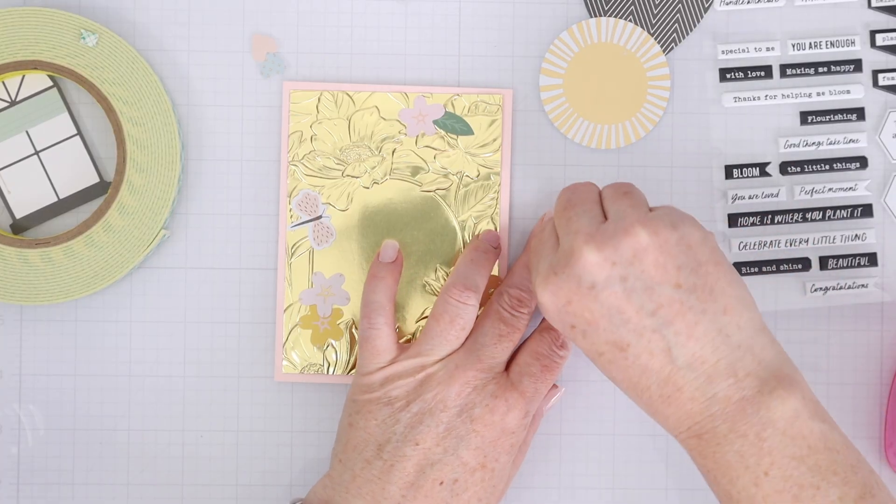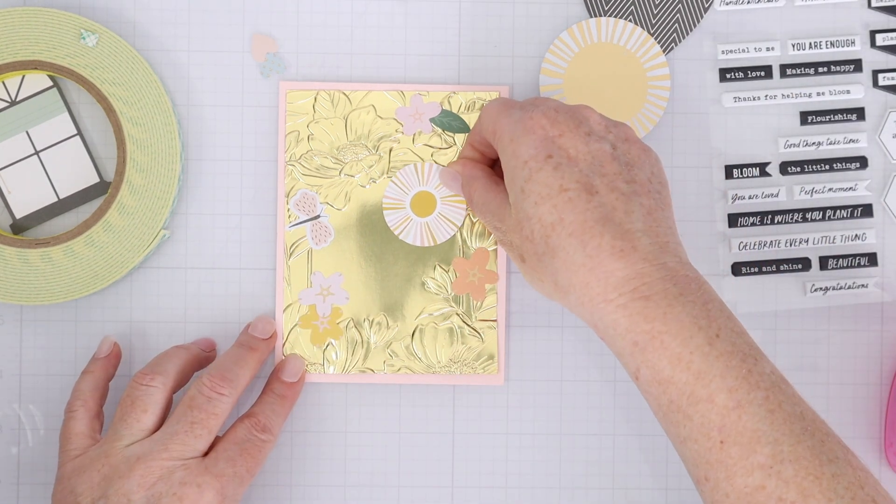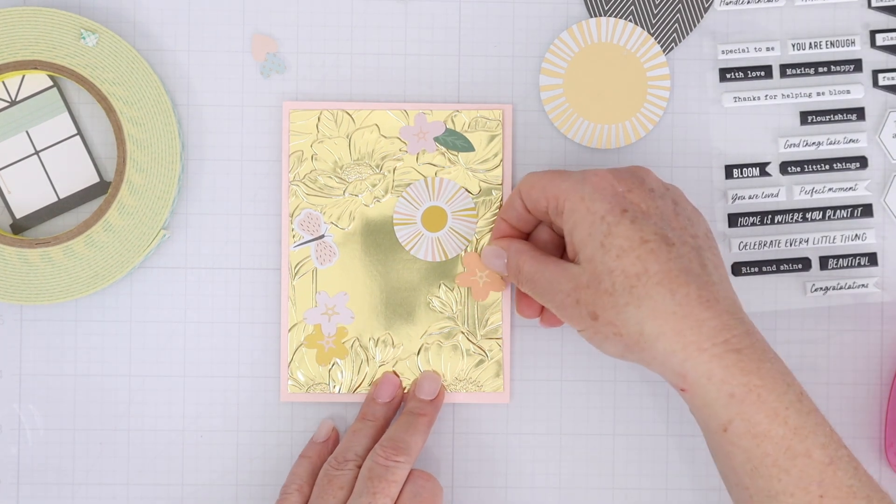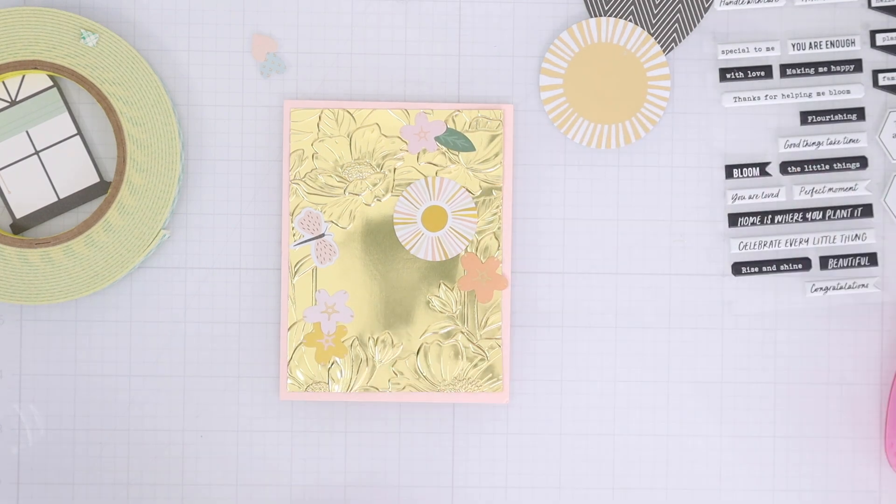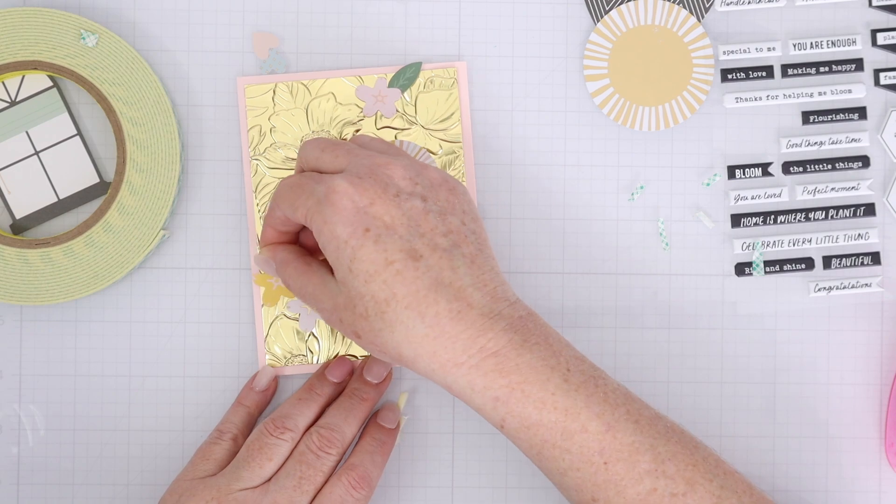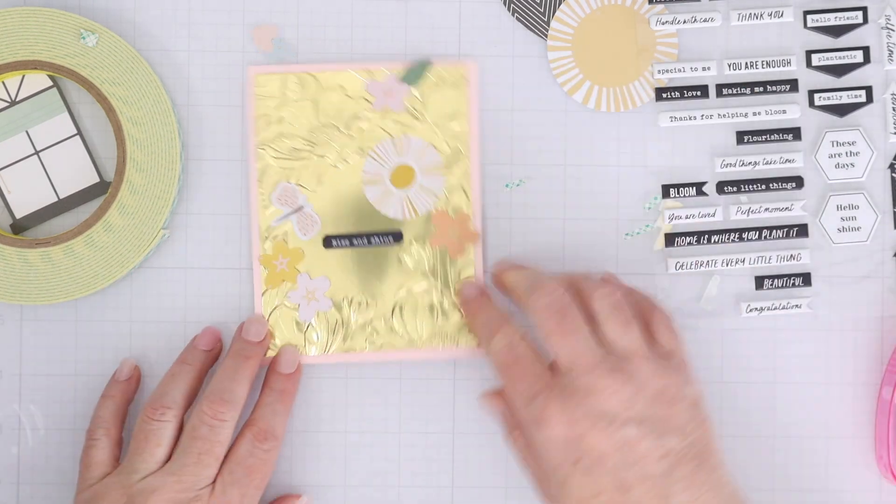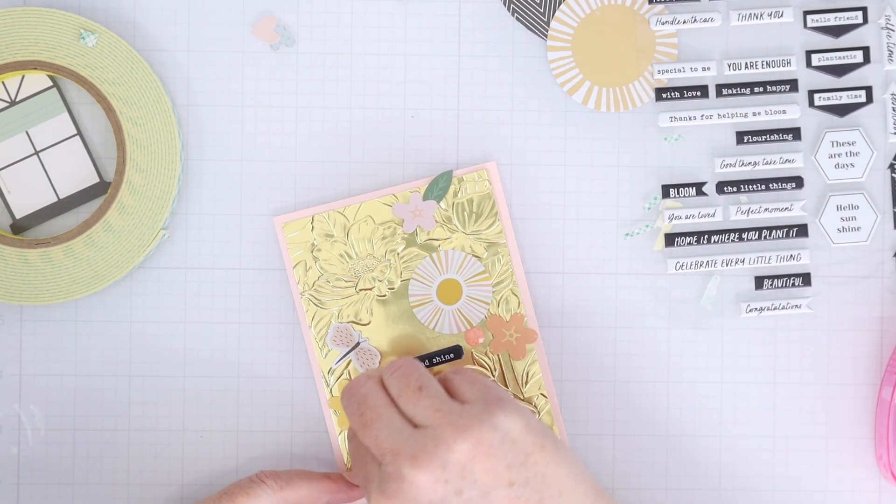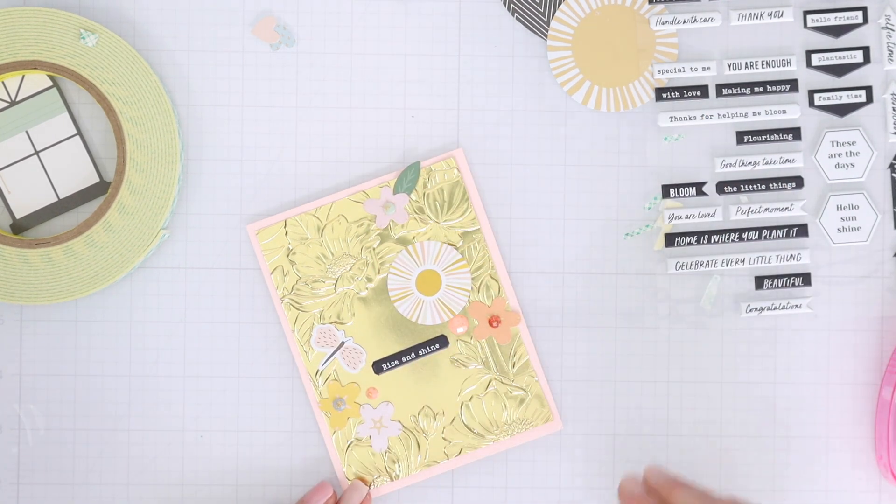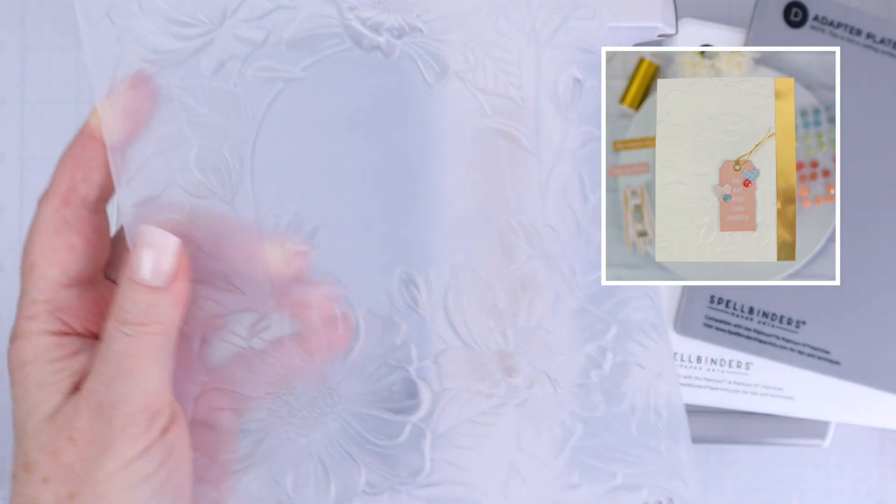So the cool thing about this embossing folder is there's lots to use on it. You could definitely do a large 5x7 card. I chose to go right around that sort of center area that's not embossed so I could place some things in there like a sentiment. I'm also going to place some die cuts along some of the embossed areas just to add in a little bit of color to that gold mirror. It's just a fun background to create on and you could do lots of things with this. You could watercolor the different flowers. You could ink blend on top of them or you could just take a piece of mirror cardstock and add some die cuts to it. Really simple and easy. Very beautiful.